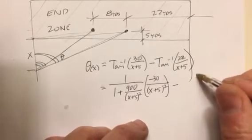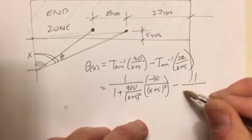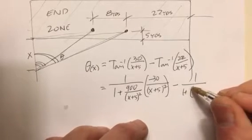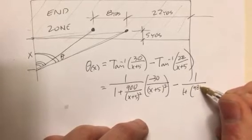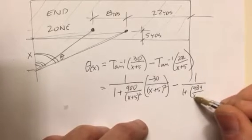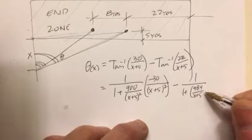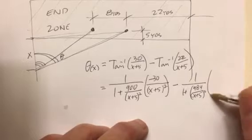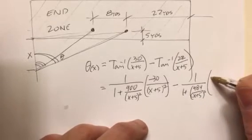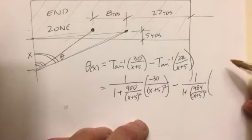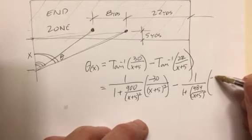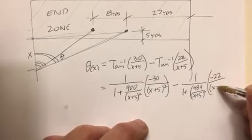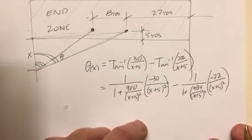Then we do the same thing for the second term. So: 1 over 1 plus 22 squared — that's 484 — over x plus 5, squared. And then the derivative of the inside by the quotient rule gives us minus 22 over x plus 5 squared.